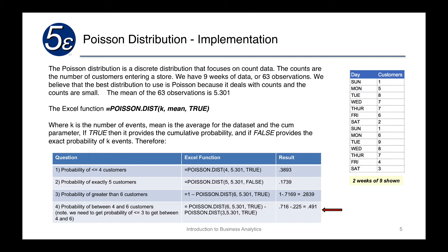For the probability of between four and six customers, we find the probability of six or fewer, which is 0.716, and subtract the probability of three or fewer. We use three rather than four because we want to include four in the range, so we use POISSON.DIST(3, 5.301, TRUE), which gives 0.225. Subtracting the two gives 0.491 — a 49.1 percent probability of getting between four and six customers.